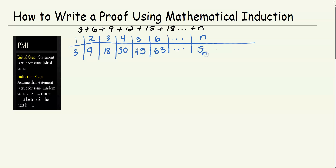If you can look at 3, 9, 18, 30, 45, 63 and tell what the pattern is, that's awesome. The tool we use to figure out a pattern — if the pattern is a polynomial — is finite differences, which we learned in a previous lesson.